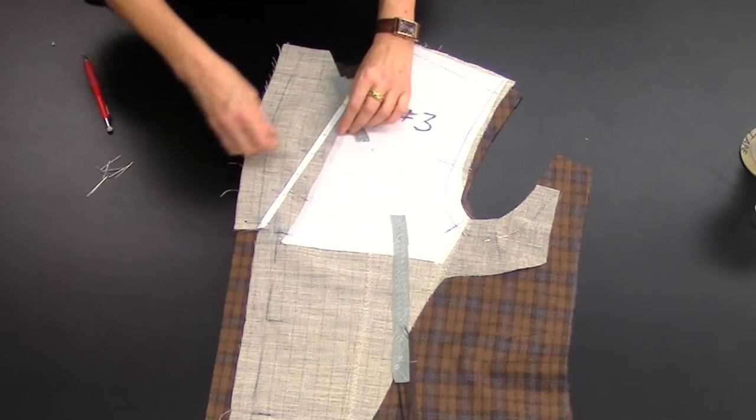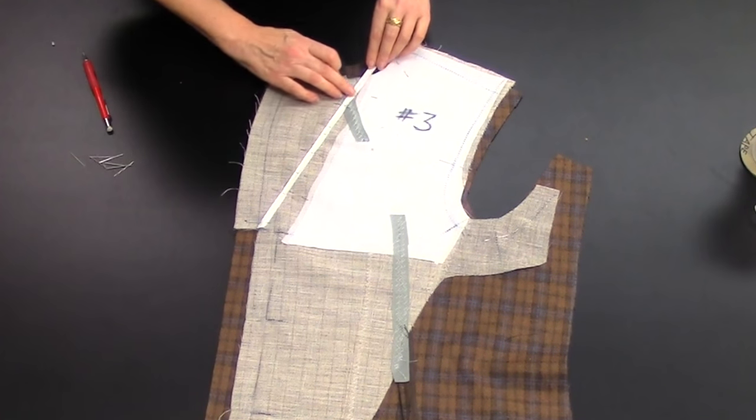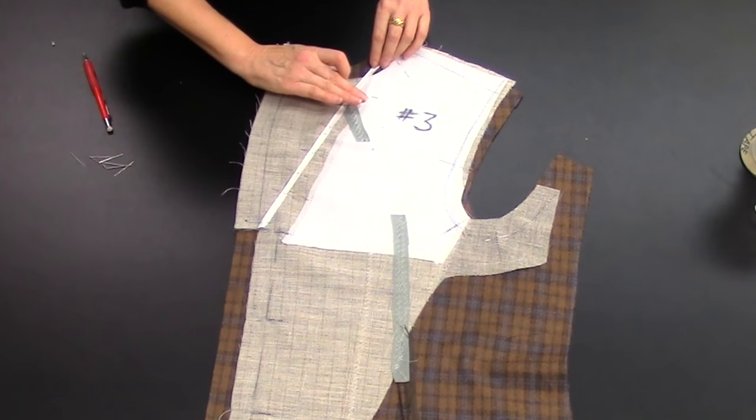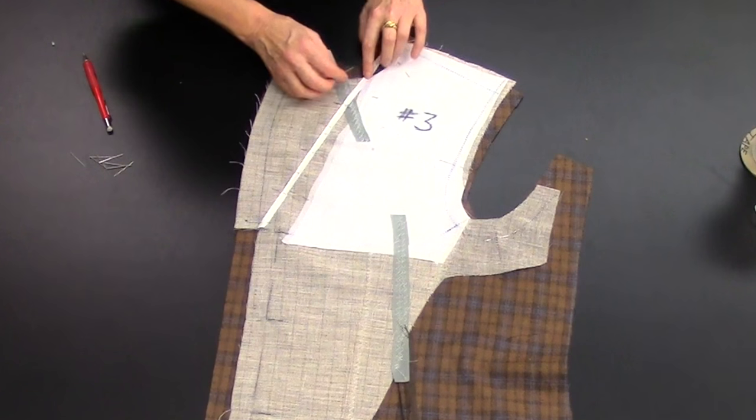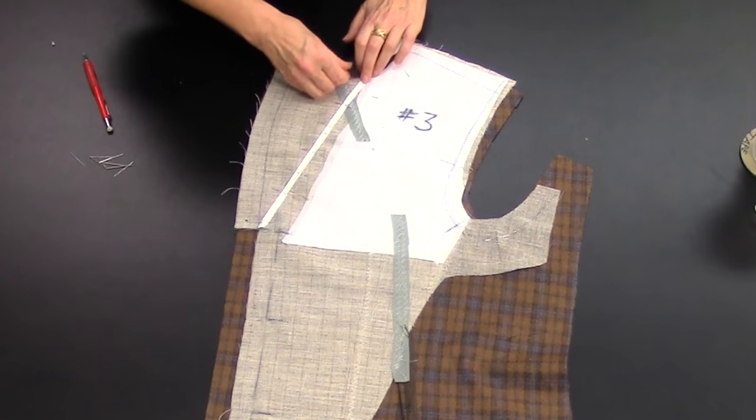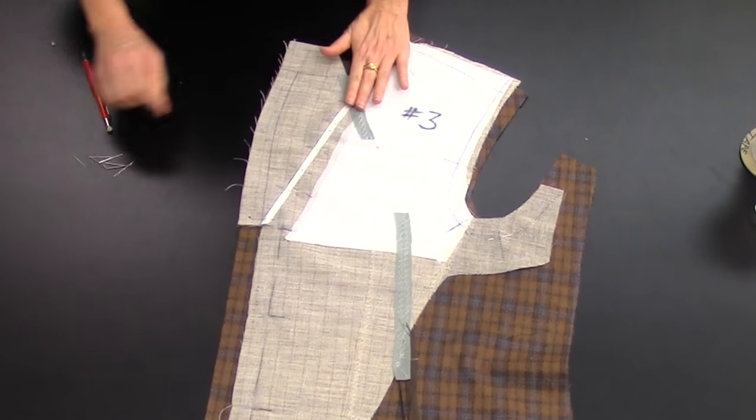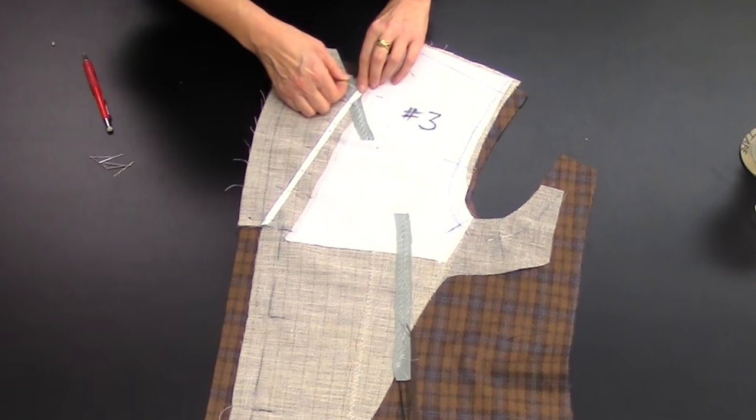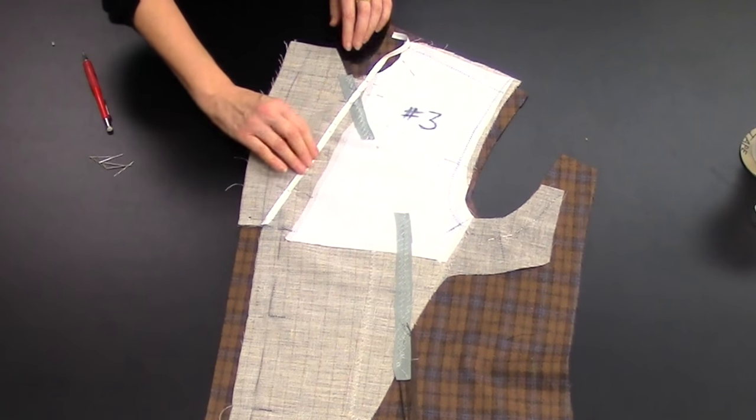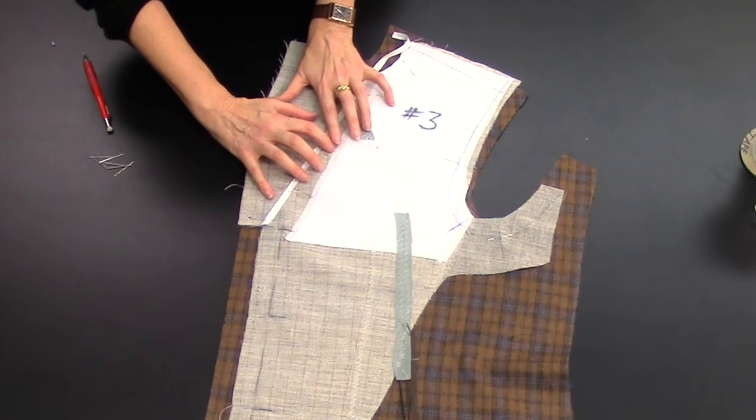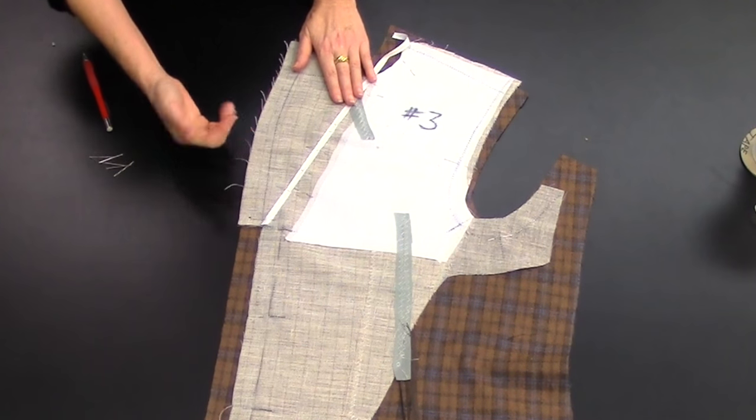Once we get past that curve of the chest area up toward the neck, that's really more of a flat plane on the body, and so I just lay it on flat, not pulling it up anymore. This stabilizes this line and keeps it drawn slightly in toward the torso so that it doesn't hang away from the chest of the gentleman.